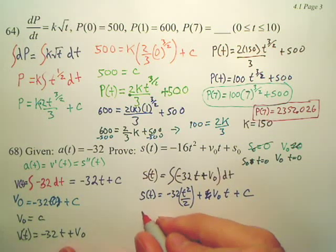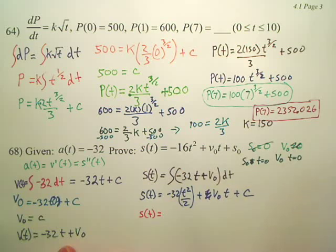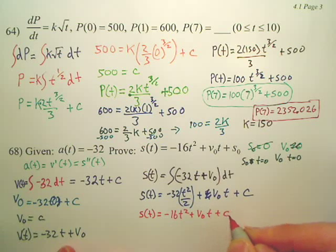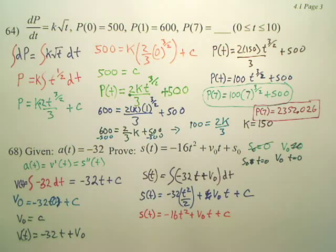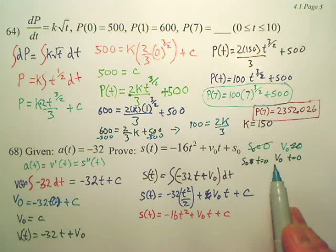So, if we rewrite this, we now have s of t is equal to negative 16t squared plus v of 0t plus c. Does this look a lot like this? Yeah. Now, the last thing is, remember here, s of 0 is when time is 0.